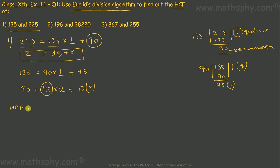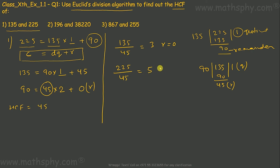So HCF would be 45. Let's do a quick check: dividing 135 by 45 gives quotient 3 and remainder 0; 45 into 3 is 135. Dividing 225 by 45 gives quotient 5 and remainder 0. In both cases, 45 divides 135 and 225 completely without leaving any remainder. There is no other number bigger than 45 that can divide both 135 and 225 leaving no remainder. That is why 45 is the highest common factor — HCF is 45.